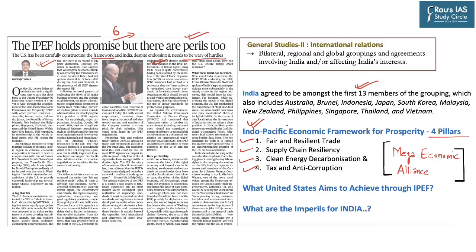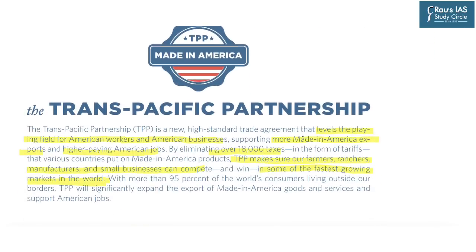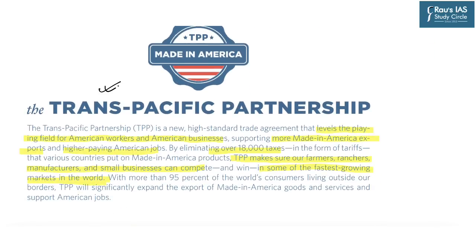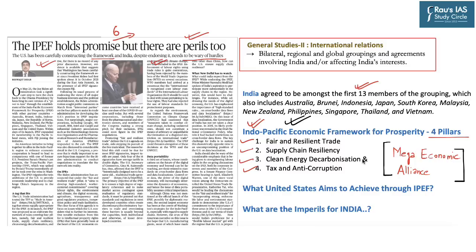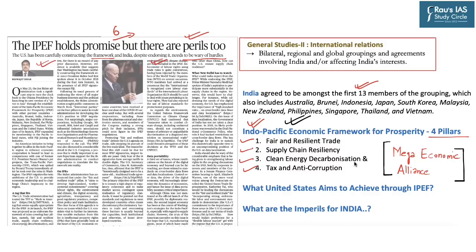The Indo-Pacific Economic Framework for Prosperity is based on the earlier framework proposed by President Obama, namely the Trans-Pacific Partnership. This partnership was also constructed to promote American business. It highlights that the agreement levels the playing field for American workers and American businesses, supporting more made-in-America exports and higher-paying American jobs. The whole idea with respect to IPEF is also to promote American business and at the same time include other like-minded countries as part of this economic deal.